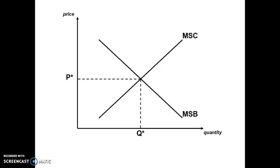Whenever we look at market failure, we want to acknowledge the socially efficient level. The most important thing here is Q*, which is how much of the product we would like. That is determined by marginal social benefit and marginal social cost — how much society benefits from an individual product and how much society pays to have it. Together, those determine Q*, how much of the product society actually would like to have.